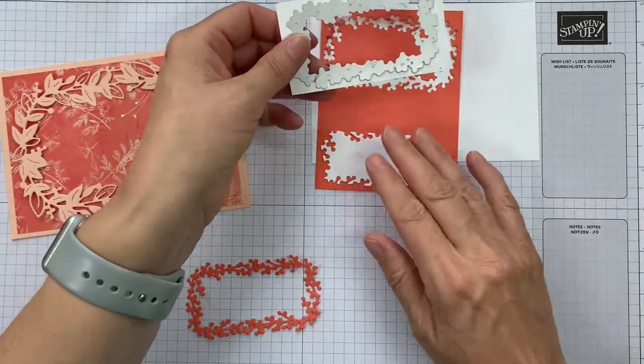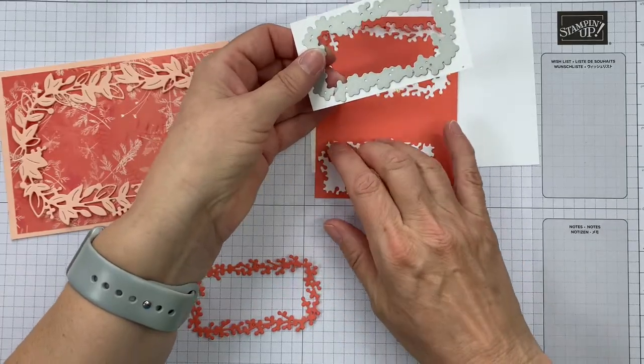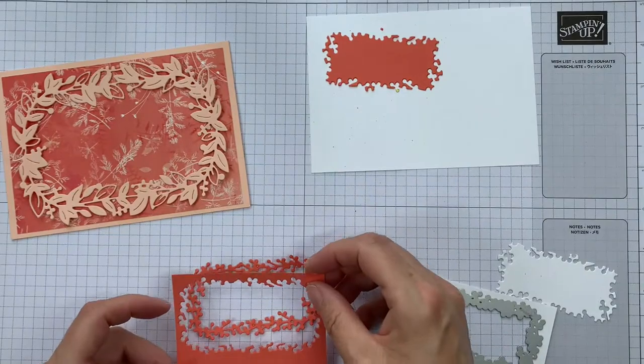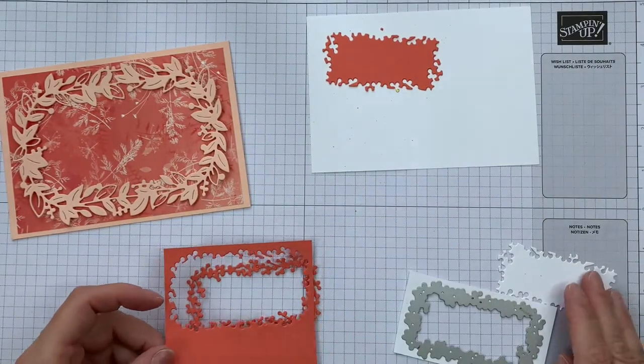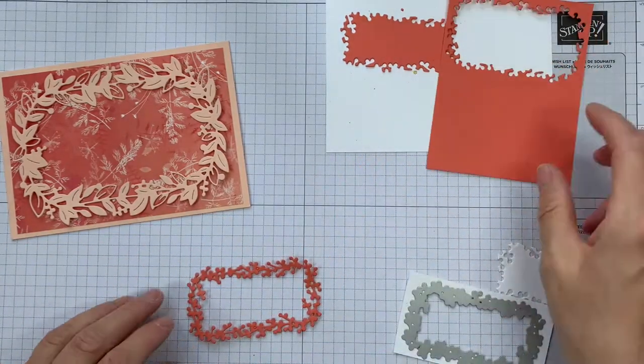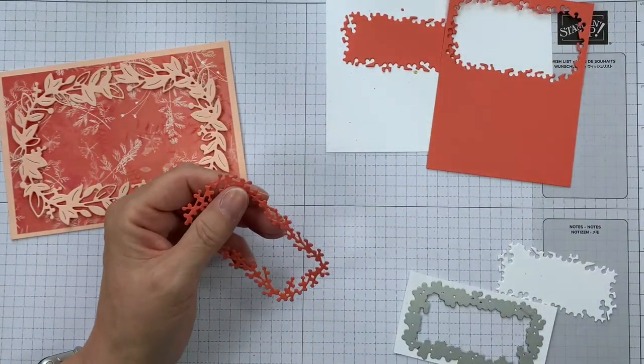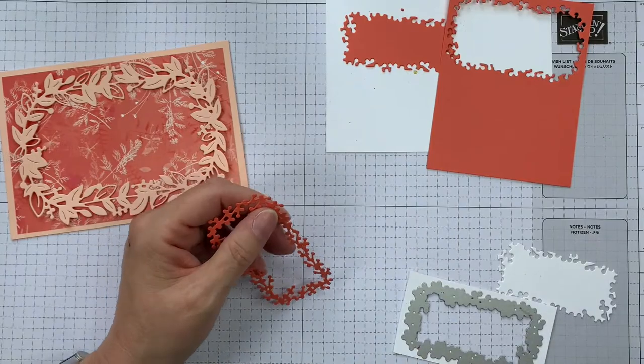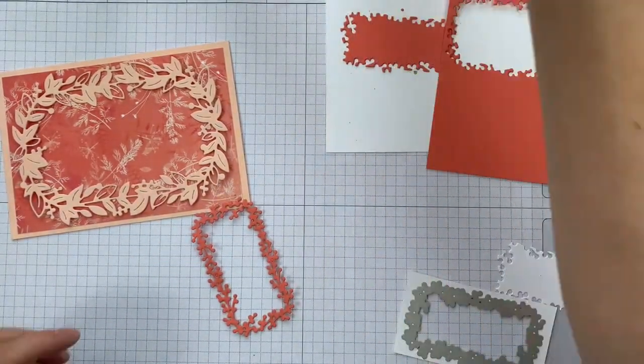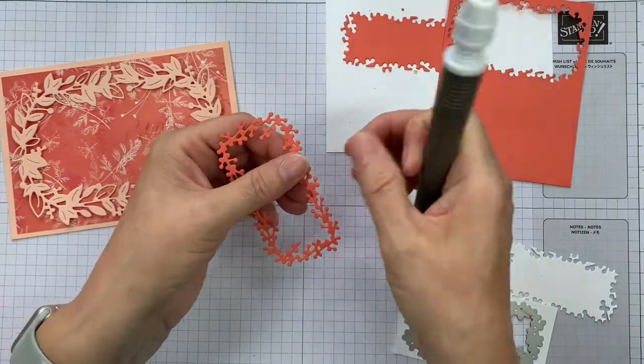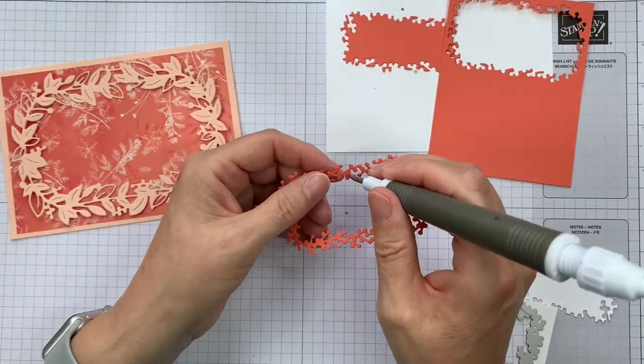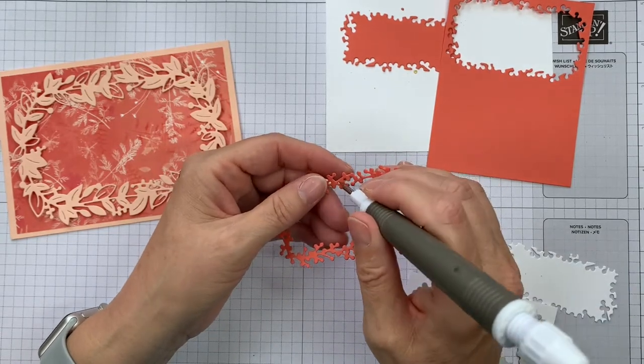So I've already die cut this out from both Calypso Coral and Basic White. I've just got some bits from the die cutting and I'm just going to pop out the last little bits. There's a couple of little bits that haven't popped out of here, so we'll just do that.